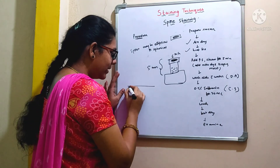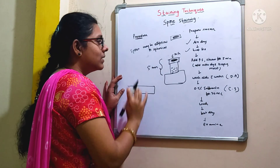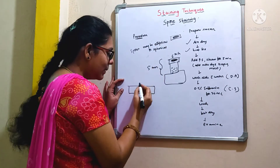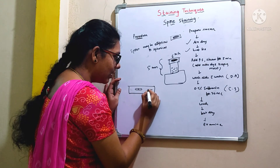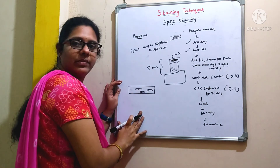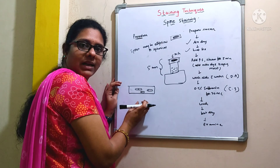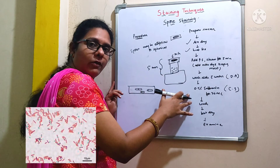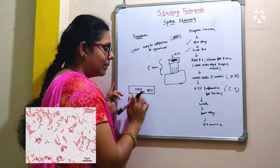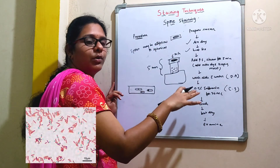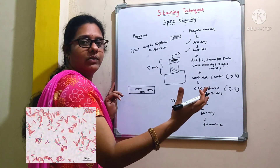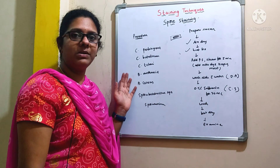When you observe the slide under the microscope, spores may be elliptical or spherical. They are generally present in the middle of the cell, at the end of the cell, or in between the end and the middle — these are the possible locations of spores within a bacterial cell. If the bacteria is a spore former, you can observe green color. If the bacterial culture is a non-spore former, those vegetative cells will appear red in color, so you can easily make out the difference.